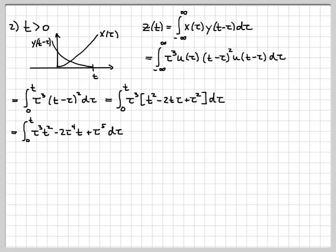So tau cubed turns into tau to the fourth over 4. The second term turns into tau to the fifth over 5. And the last term turns into tau to the sixth over 6. And I have to evaluate all of this at t and 0.